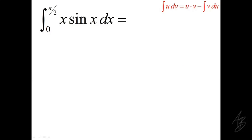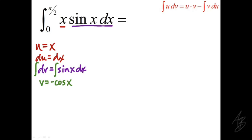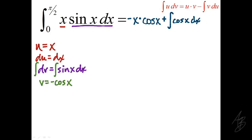We can also use integration by parts with definite integrals. We choose u equals x and dv equals sine of x dx, then solve for du and v. Plugging into the formula gives negative x cosine of x plus the integral of cosine of x dx. Notice that in this step I did not include the limits of integration — we'll evaluate it as an indefinite integral first, then apply the limits.